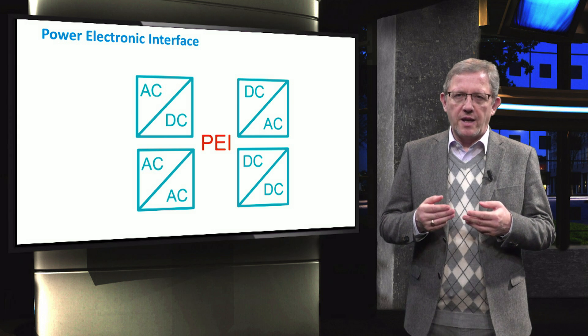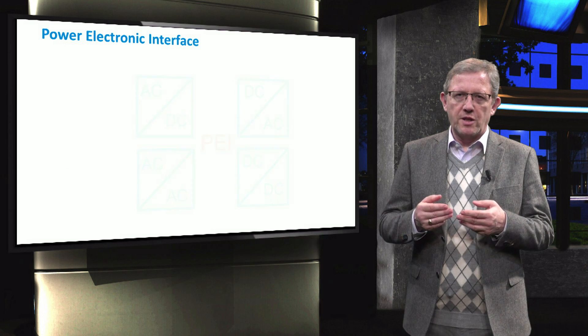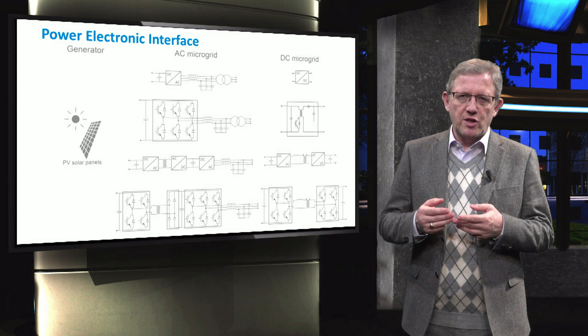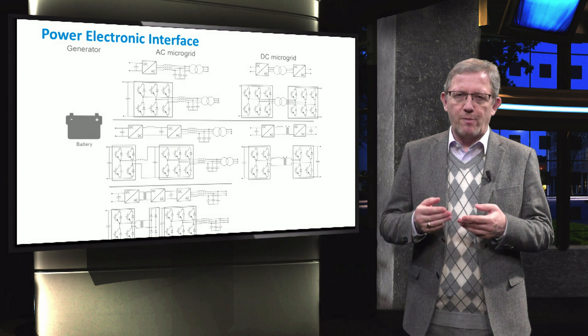These interfaces in AC and DC microgrids include non-renewable energy generation like a microturbine, also renewable energy generation based components like a photovoltaic solar and energy storage technologies like a battery.